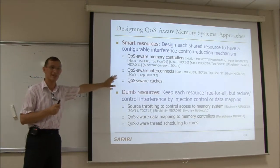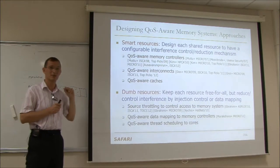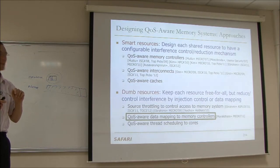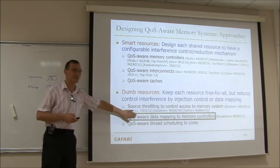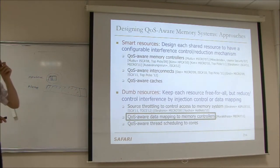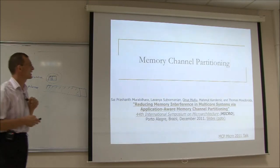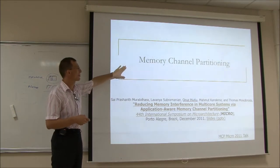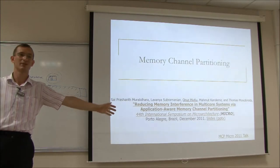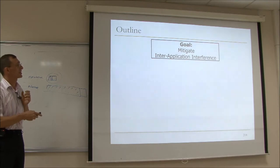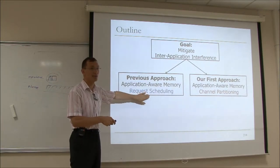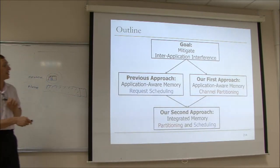This is a completely different approach from what we've seen before — you're managing interference at the periphery rather than in the shared resources. Now let me give you one more mechanism: quality of service over data mapping to memory controllers, or memory channel partitioning. When looking at different approaches, one way of reducing interference is to map the data of two threads that are interfering with each other to different memory channels — then they won't interfere with each other and you can eliminate interference.